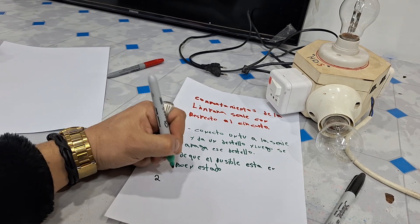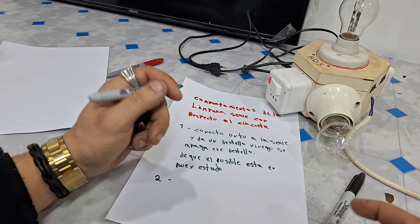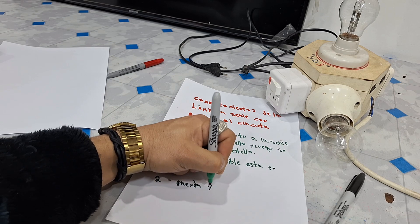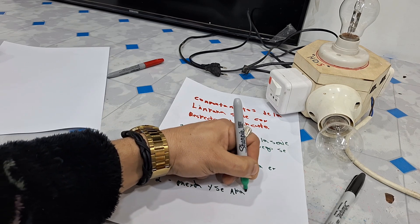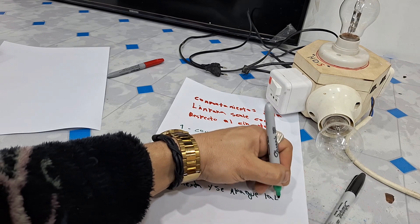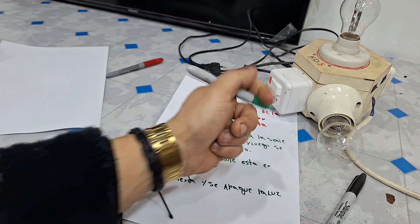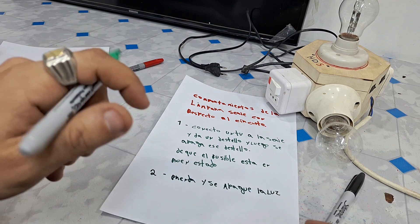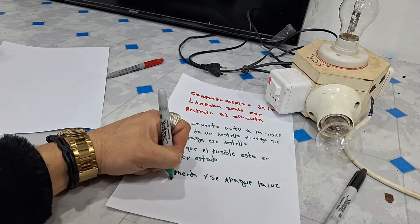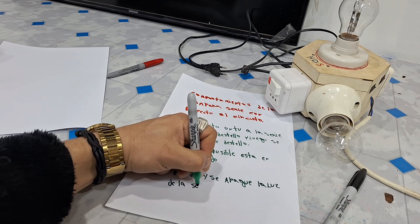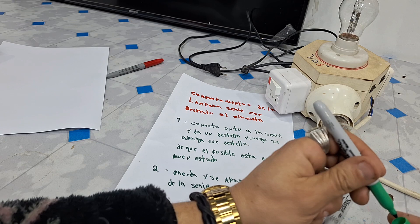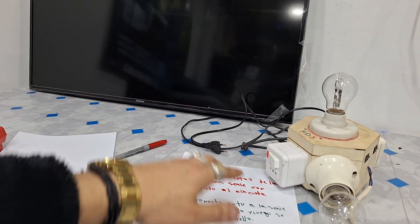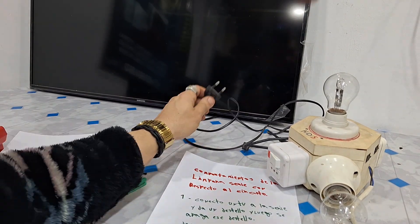Segundo comportamiento de la lámpara serie: que al conectarlo prenda y se apague la luz. Es decir, tú conectas el aparato y hace esto: se prende y se apaga, se prende y se apaga. Tengo un televisor Samsung con pantalla quebrada. Voy a conectar el equipo. Observa lo que va a pasar.